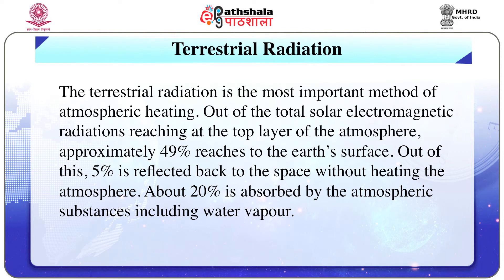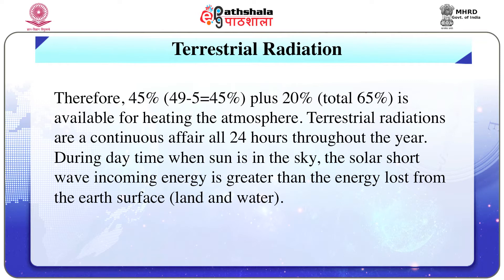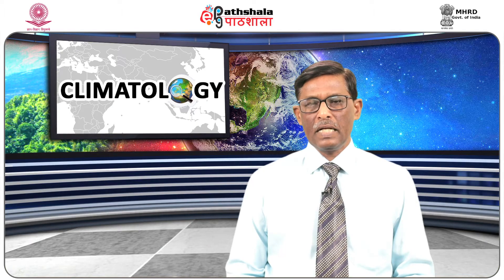Now, let us talk about terrestrial radiation. Terrestrial radiation is the most important method of atmospheric heating. Out of the total solar electromagnetic radiations reaching at the top layer of the atmosphere, approximately 49% reaches to the earth's surface. Out of this, 5% is reflected back to space without heating the atmosphere, and about 20% is absorbed by the atmospheric substances including water vapor. Therefore, 44% reaching the surface plus 20% absorbed in the atmosphere — totaling 65% — is available for heating the atmosphere. All the above-mentioned energy reaches the surface of the earth in the form of short wave electromagnetic radiations from the sun.